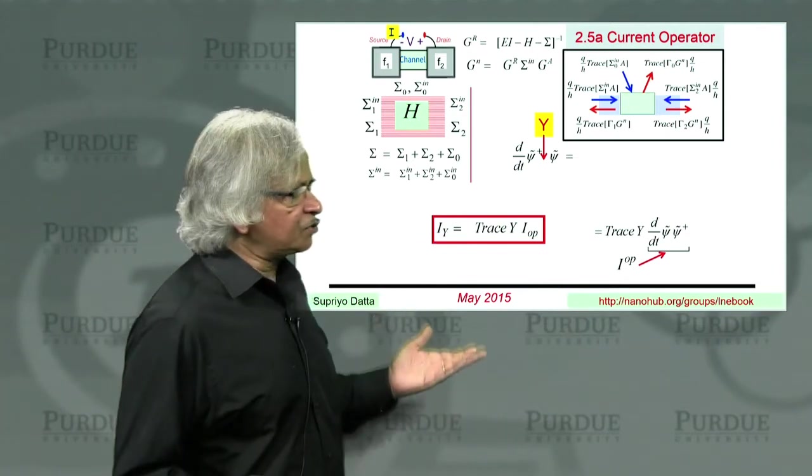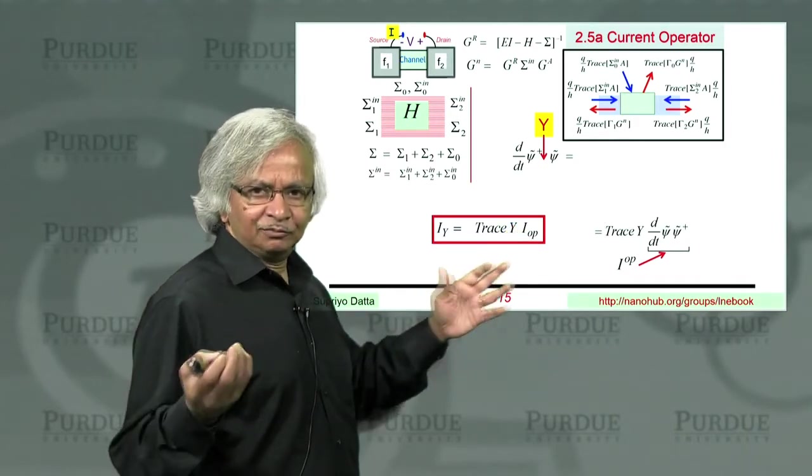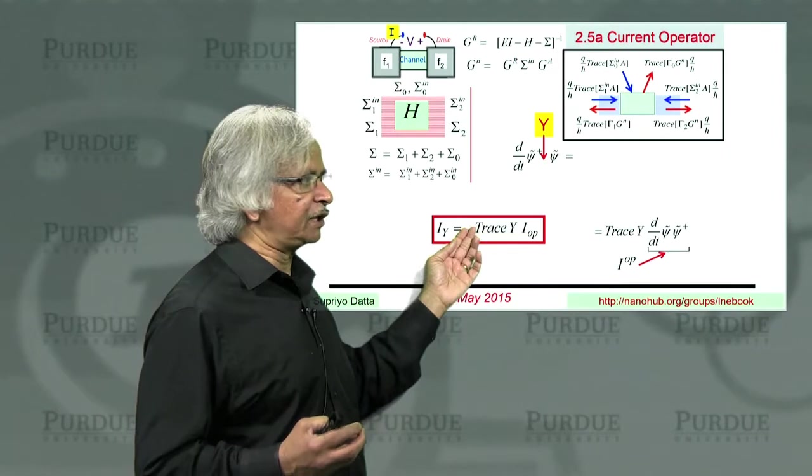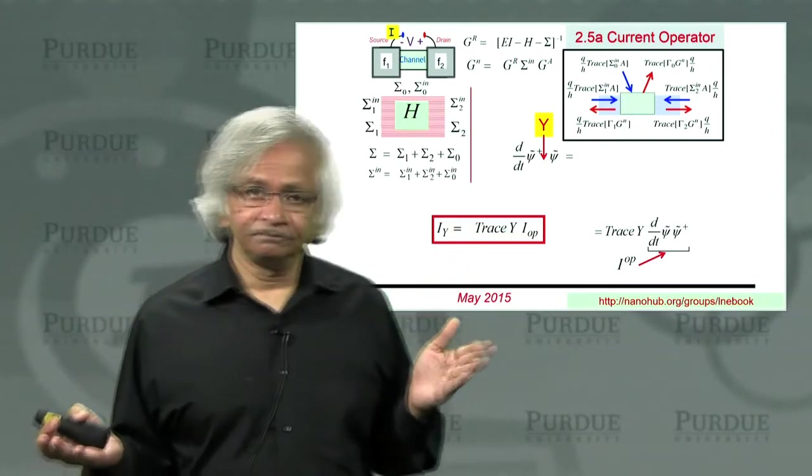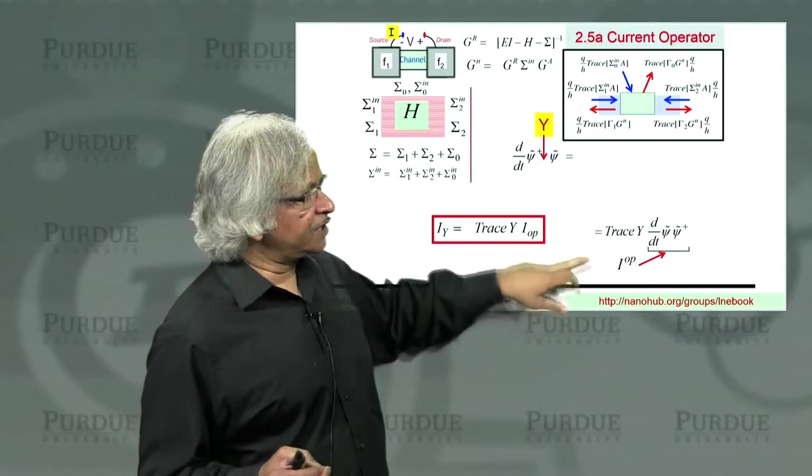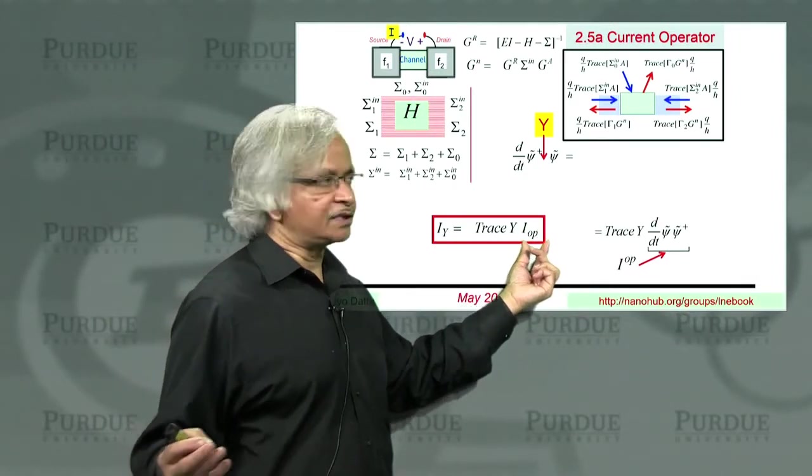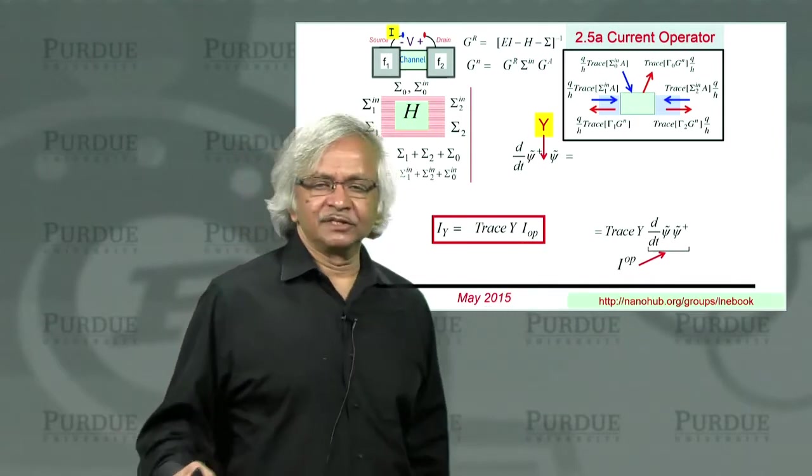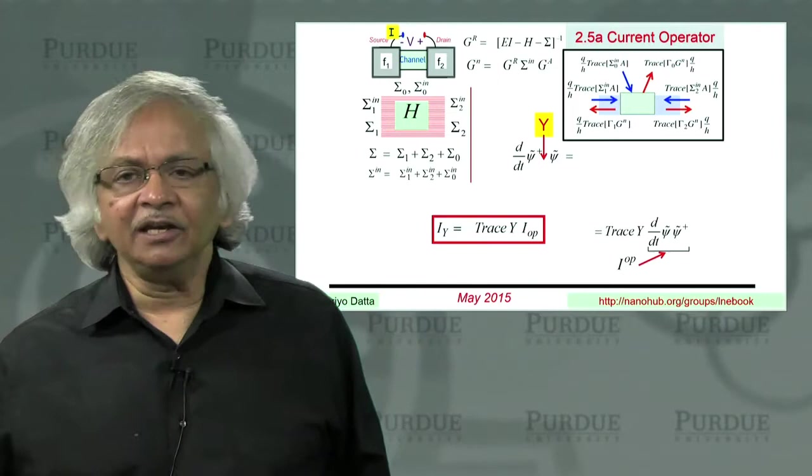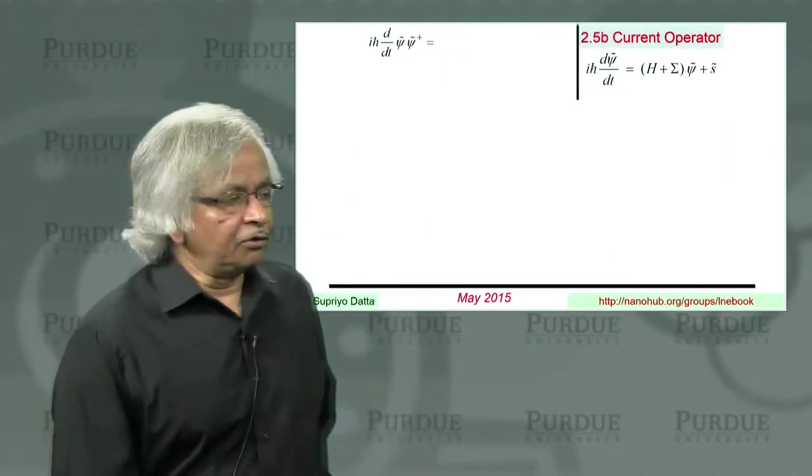On the other hand, if you just want the flow of charge, that's fine too. Then Y is just Q. That's just a number. So Q times the identity matrix, and you could pull it out, like we have been doing before. So, but what we want to do in this lecture is obtain a general expression for this I_op, this I operator, which in principle, you could use to find the current of any quantity of interest.